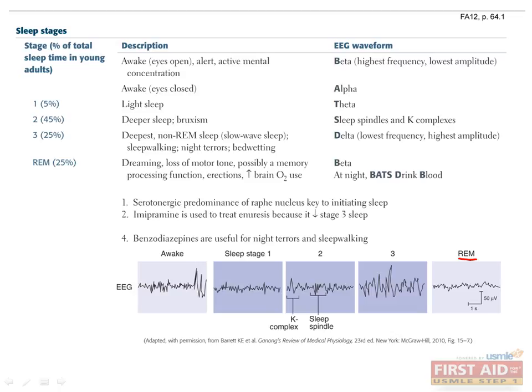It is because of these extraocular movements that this phase of sleep is termed rapid eye movement sleep. Alcohol, benzodiazepines, and barbiturates are associated with reduced REM and delta sleep.